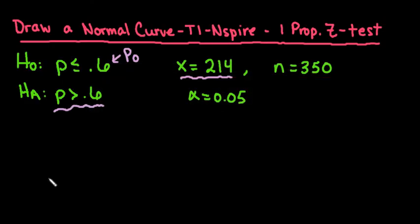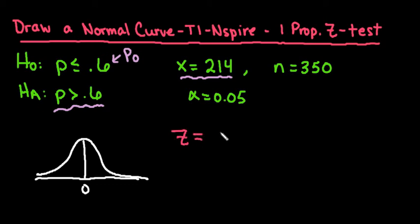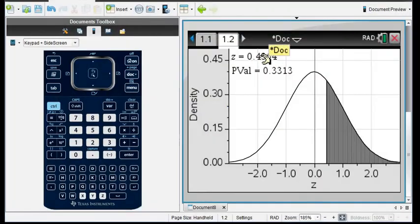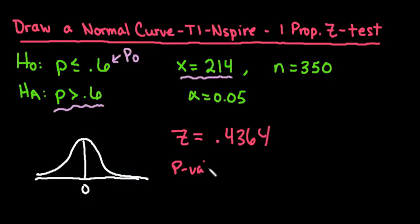So I'm going to go ahead and draw my picture out. That was a really bad line. Let me try that again. I have my board sideways. OK, so if I draw my normal curve out, it's going to be centered at 0. I'm going to write down the important information. It told us our standardized test statistic z is equal to 0.4364. So this value right here is our z, or our standardized test statistic, and our p-value is 0.3313. When I shade this, I'm going to shade basically to make it look similar to what was in the calculator. The calculator can clearly draw a better picture than I can today.